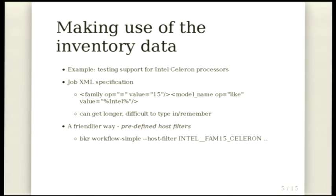For example, if you're wanting to check that the operating system works properly on Intel Celerons, Intel Celeron is actually family 15 from Intel's point of view, and so Beaker will say we know that this is a family 15 CPU. That's a bit obscure for most people to try and remember, so we actually have these predefined host filters where you can just say give me an Intel family 15 Celeron and search through the list of predefined filters. That's currently only available through the command line interface — the web UI will get you started, but if you're doing this day in, day out, you just want the computer to take care of it.